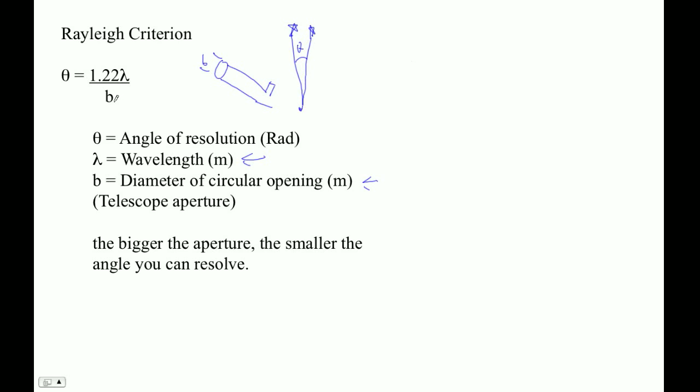And notice that the bigger the aperture you have, the smaller that radius is. The smaller wavelength you use, the smaller that angle is.